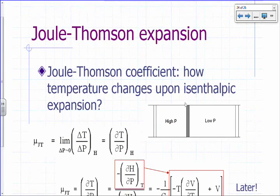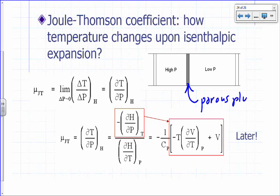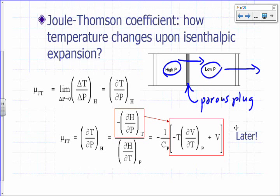Let's talk about Joule-Thompson expansion. In a Joule-Thompson expansion, you have a porous plug that lets gas through. You maintain a low pressure on one side and a high pressure on the other. As the gas emerges through the porous plug, it goes from a high-pressure area to a low-pressure area. You can measure the temperature on each side and get delta T.